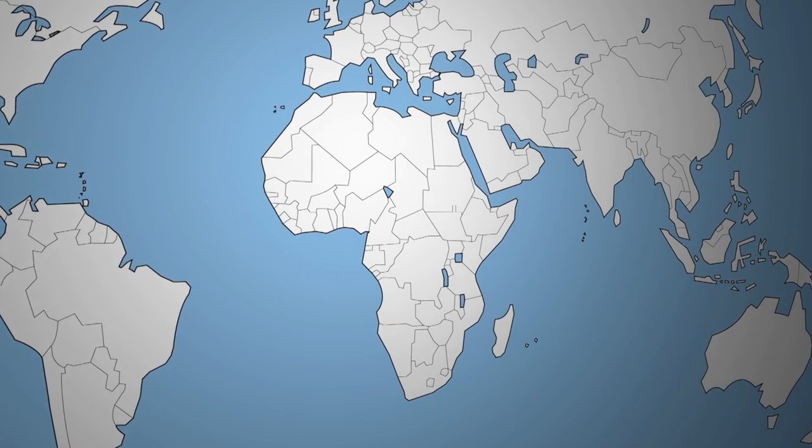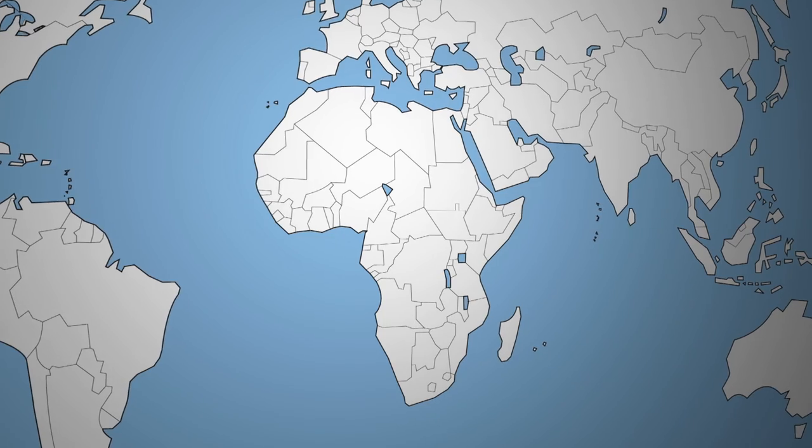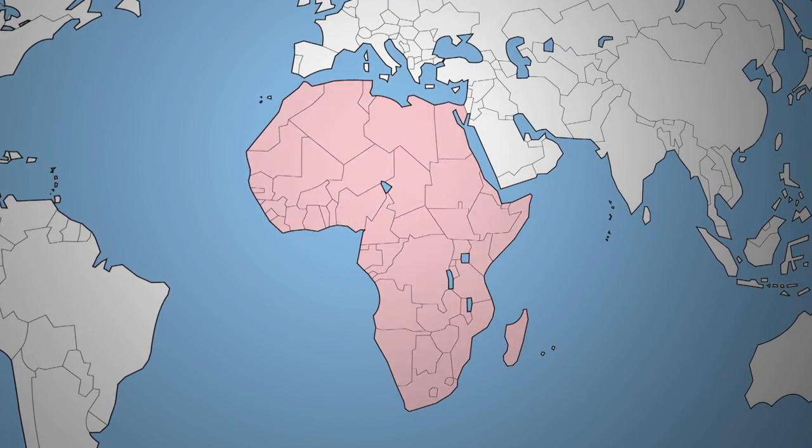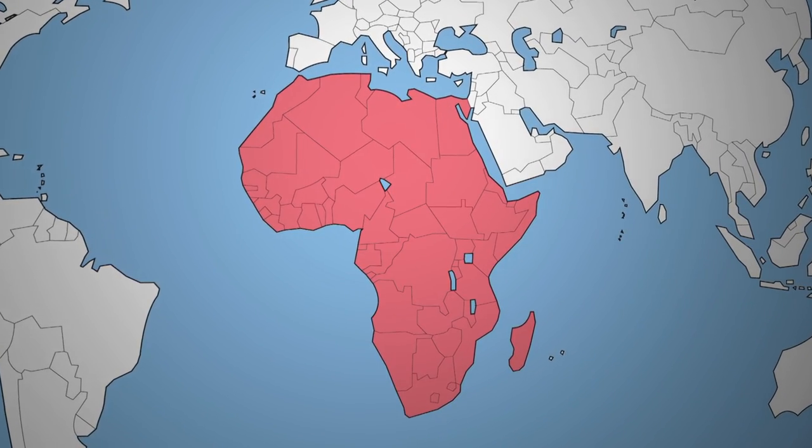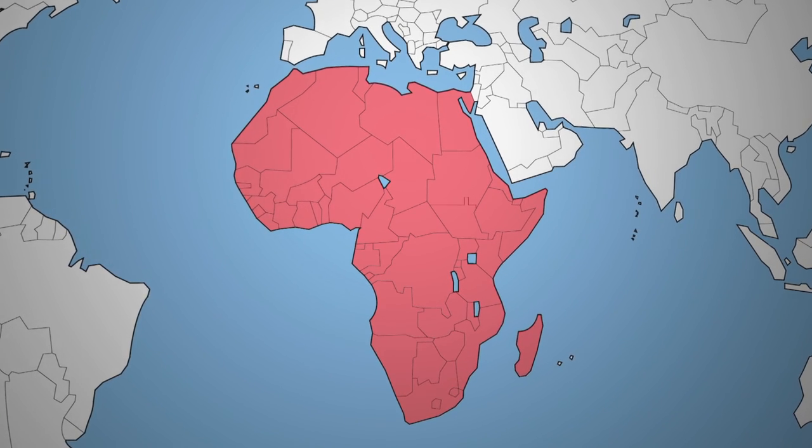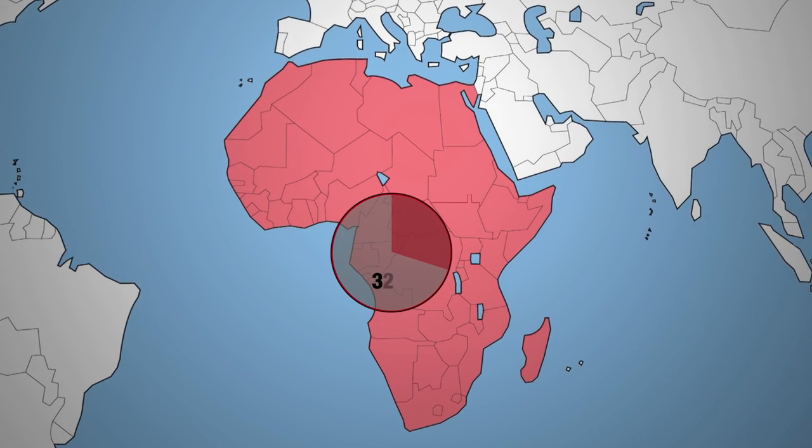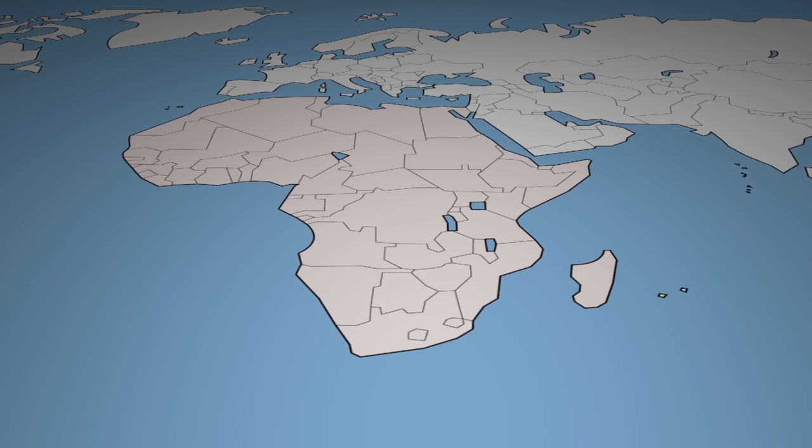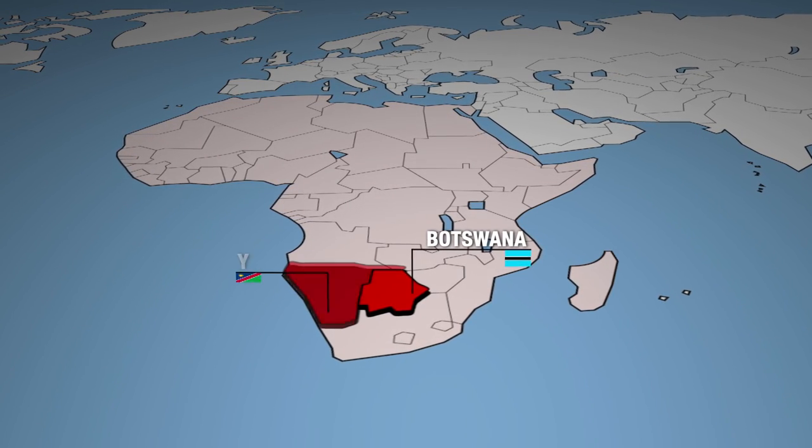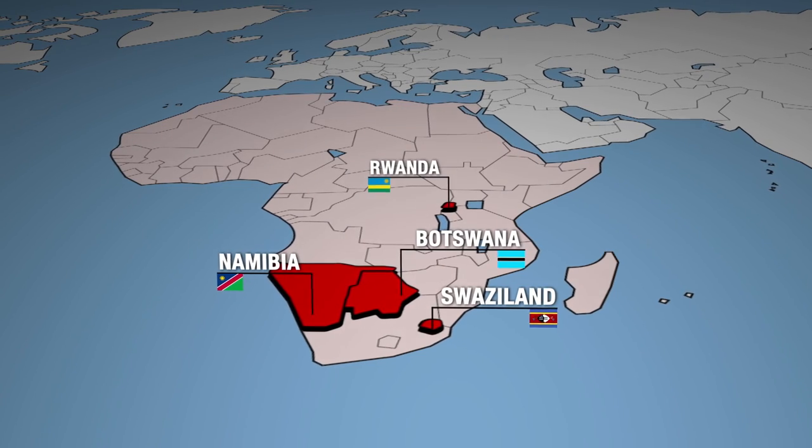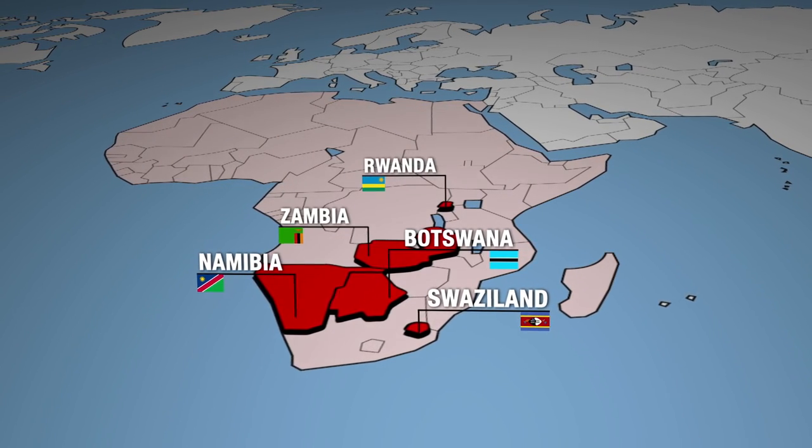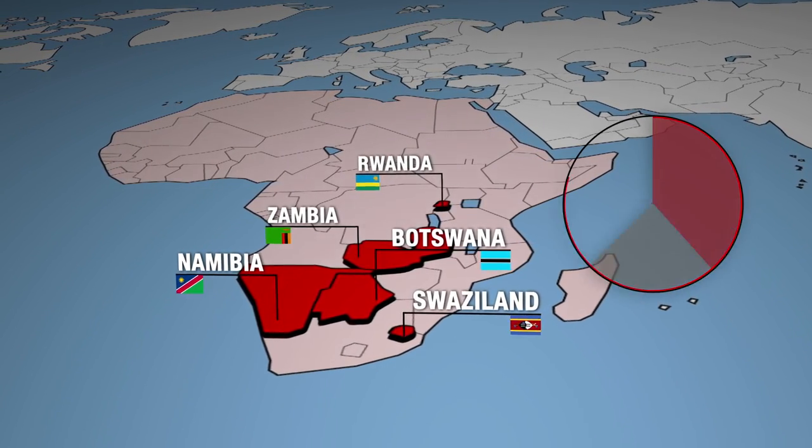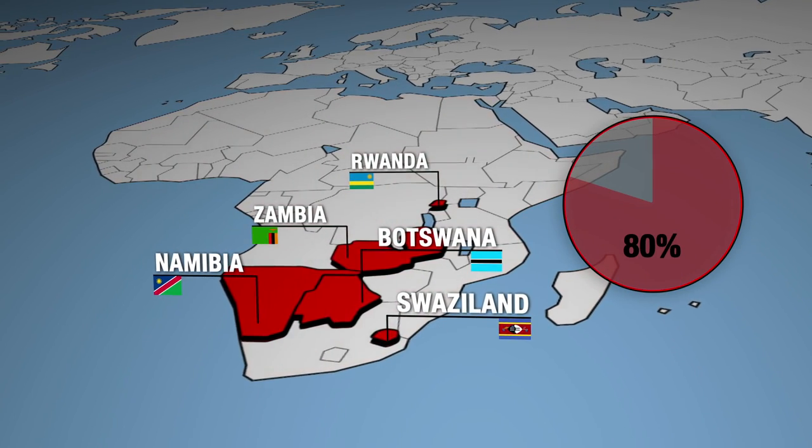With 25 million people who are HIV positive, Africa is by far the worst affected continent. But in ten years, the number of sick people receiving treatment has increased by 30%. Five countries are noteworthy: Botswana, Namibia, Rwanda, Swaziland, and Zambia, as they have provided treatment to 80% of their citizens suffering from the disease.